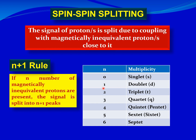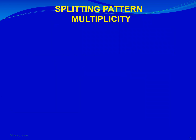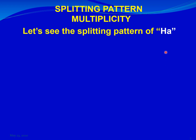If a proton has one proton in the vicinity, then its signal is split into two, which we call a doublet. If a proton has two protons in the neighborhood, its signal is split into three, and continuing: four, five, six, and seven for the corresponding number of neighboring protons. Now we will look at the splitting pattern and multiplicity of HA, shown in white, placed in different conditions to see its splitting pattern and multiplicity.